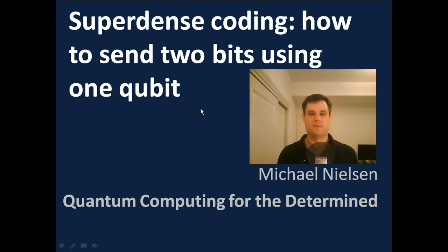So we now know enough about quantum information to begin understanding some of the remarkable information processing capabilities of quantum systems. In this video I'm going to explain one of the simplest procedures for doing such information processing called superdense coding.